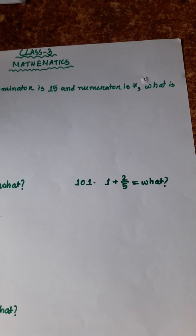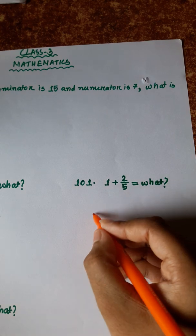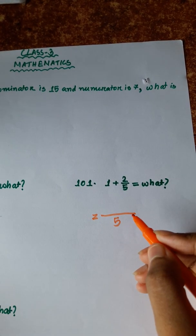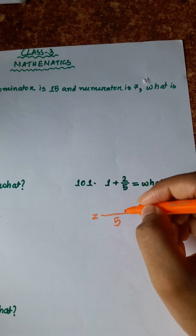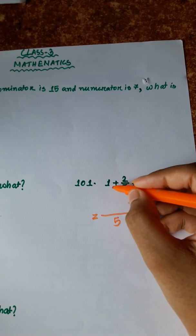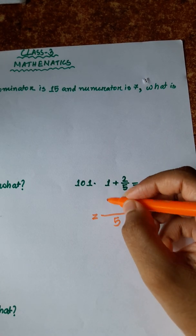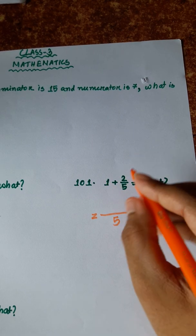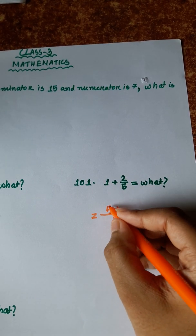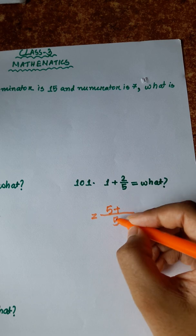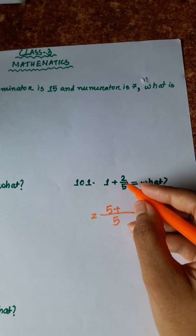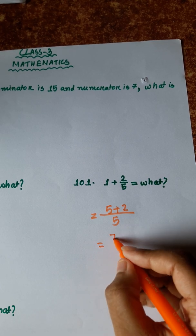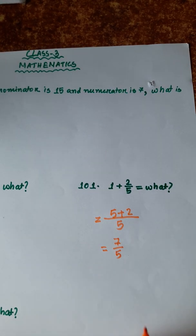Question 101: 1 plus 2/5. Similarly, 1 is written as 5/5 with denominator 5 as the LCM. So 5/5 plus 2/5: the denominator is 5 and 5 plus 2 equals 7. The answer is 7/5.